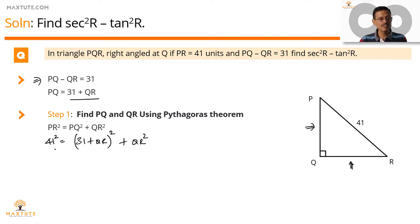Let's expand this expression. 41 square is equal to 1681. This is equal to, we have an X plus Y, the whole square format here, which is X square plus 2XY plus Y square. So it's going to be X square, which is 31 square, which is 961, plus 2XY will be 2 into 31 into QR, which is 62 QR, plus Y square is QR square. And then we have one more QR square.